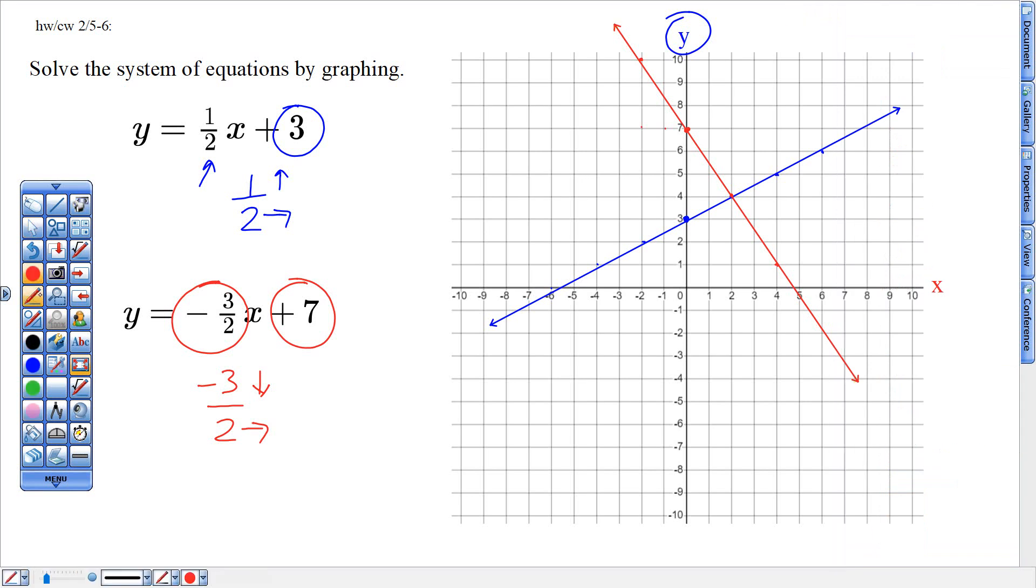And then that coordinate right there where they touch looks like the coordinate right two for x up four for y. That is the solution two four. If I could do my check I would plug in four for my y and two for my x to see if that would work.